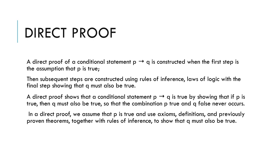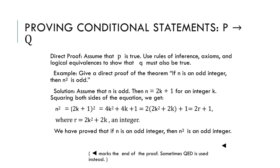In direct proof, you assume P is true and use laws of logic to find the final answer. If you fail to do so — if you cannot prove that P leads to a true Q — then the whole statement is false and the theorem is disproved. So the strategy is: start with P assumed true and work toward showing Q is true.